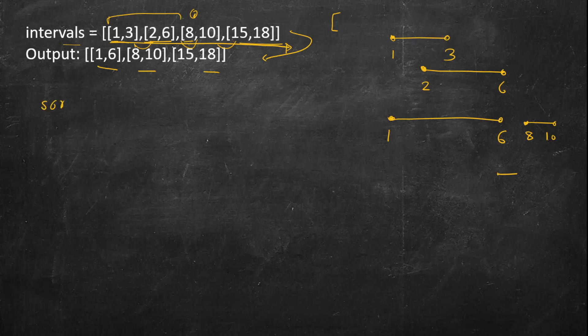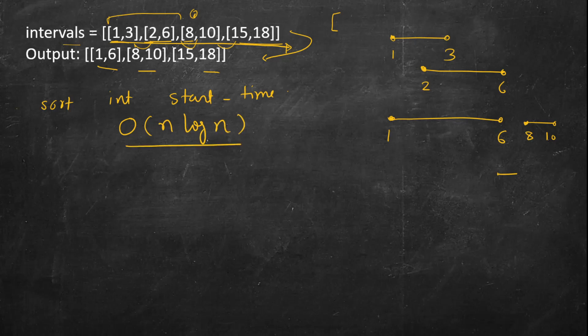So what we will do first is sort the intervals based on start time. This takes O(n log n) using any standard comparison-based sorting algorithm, where n is the number of intervals. That's the first step. Now we iterate through the sorted intervals list.